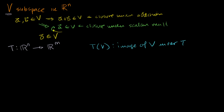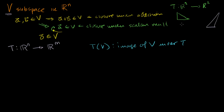In the last video, just to help you visualize it: we had some subset of R2 that looked like a triangle, and we figured out its image under T going from R2 to R2. It ended up looking like a triangle that was rotated and skewed. The exact particulars of that last video aren't what matter — what matters is that you can visualize what an image under a transformation means.